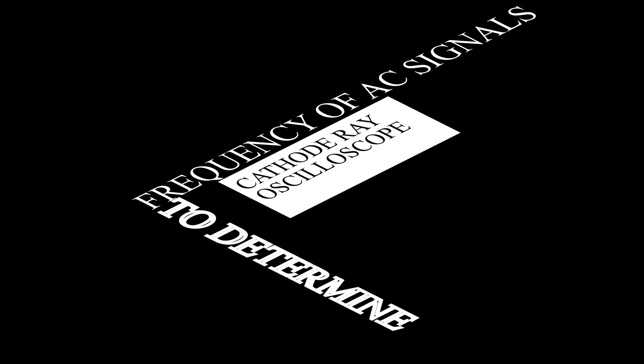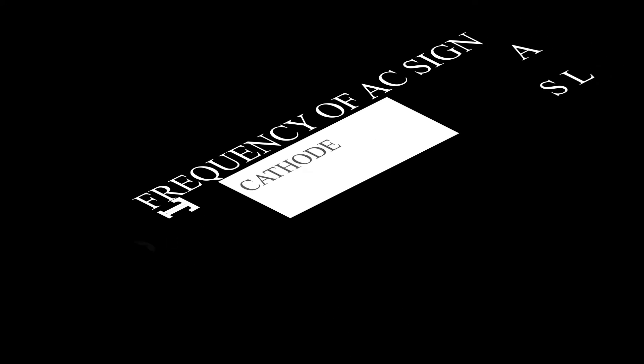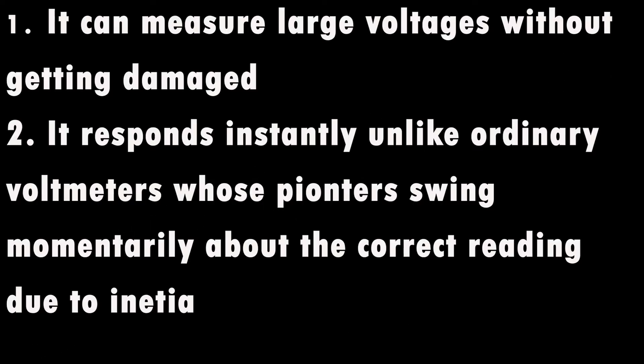The cathode ray oscilloscope is advantageous over the ordinary voltmeters because it can measure large voltages without getting damaged, responds instantaneously unlike ordinary voltmeters whose pointers will swing momentarily about the correct reading due to inertia.